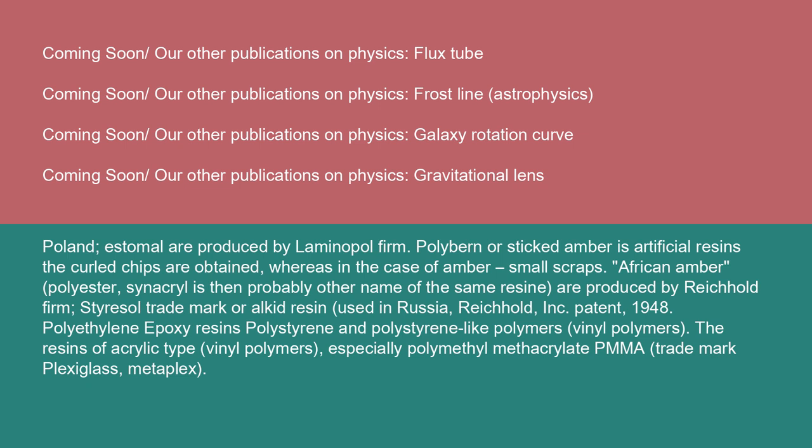Polyburn or pressed amber is an artificial resin from which curled chips are obtained, whereas in the case of amber, small scraps are used. African amber is a polyester; Cynacryl is probably another name of the same resin, produced by the Reichhold firm. Styrosol trademark, an alkyd resin, is used in Russia (Reichhold Incorporated patent, 1948). Other imitation materials include polyethylene, epoxy resins, polystyrene and polystyrene-like polymers, vinyl polymers, and resins of acrylic type — especially polymethyl methacrylate (PMMA), trademarked as Plexiglass or Metaplex.